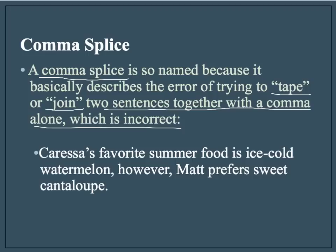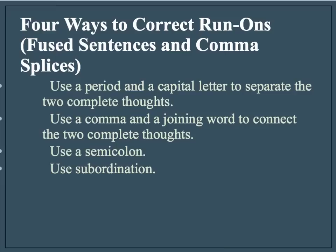And that's incorrect. Here's another example of a comma splice. Caressa's favorite summer food is ice-cold watermelon, however Matt prefers sweet cantaloupe. You can see that this comma right here between these two complete sentences is creating a comma splice. This comma functions sort of like a piece of tape — taping those two sentences together. The problem is you cannot use a comma alone to join two complete sentences together correctly.